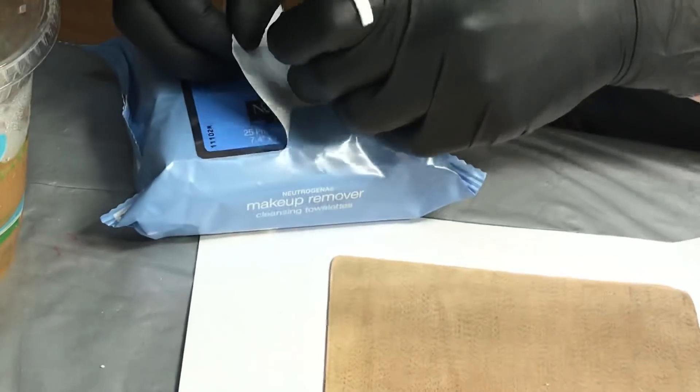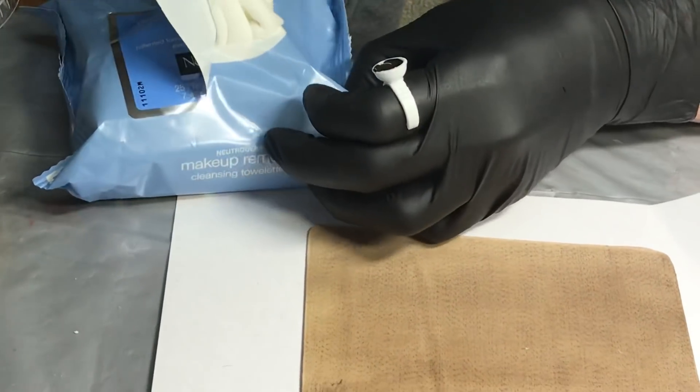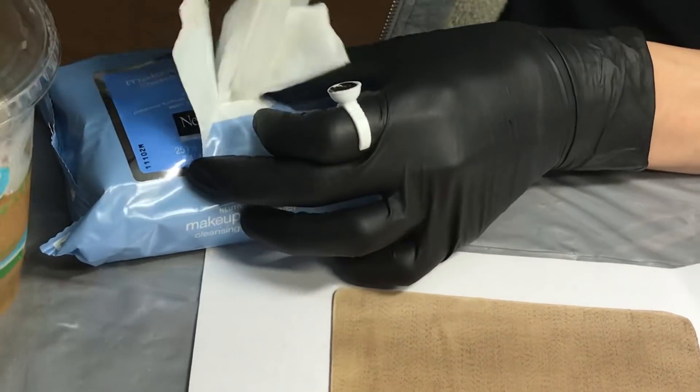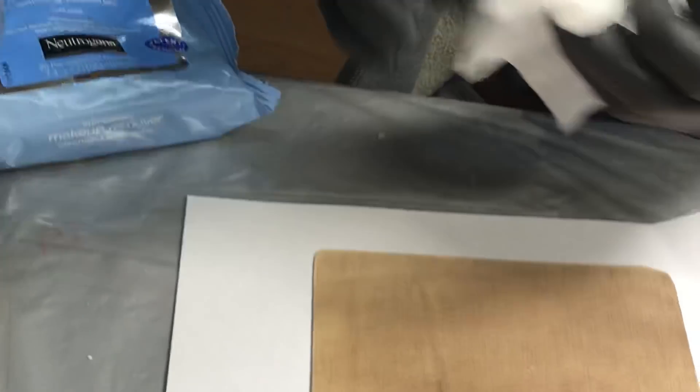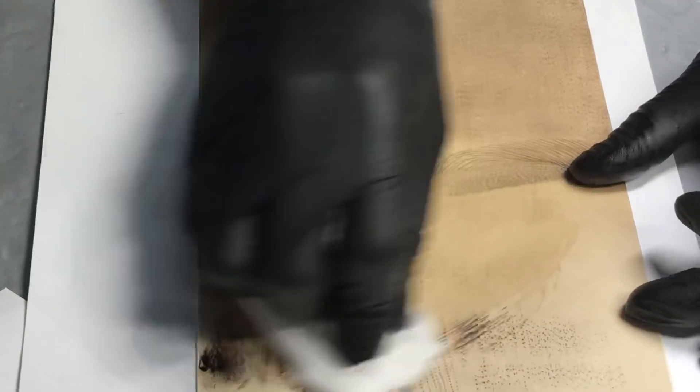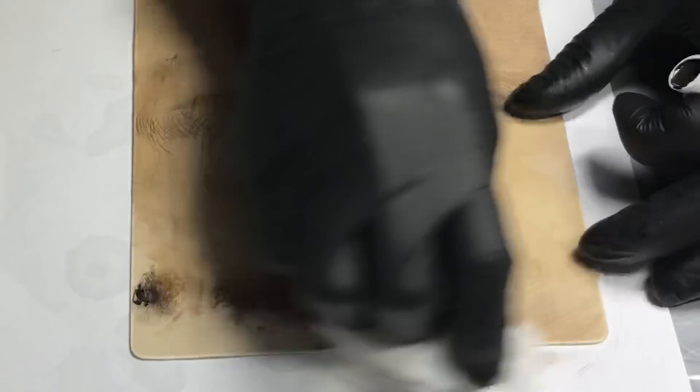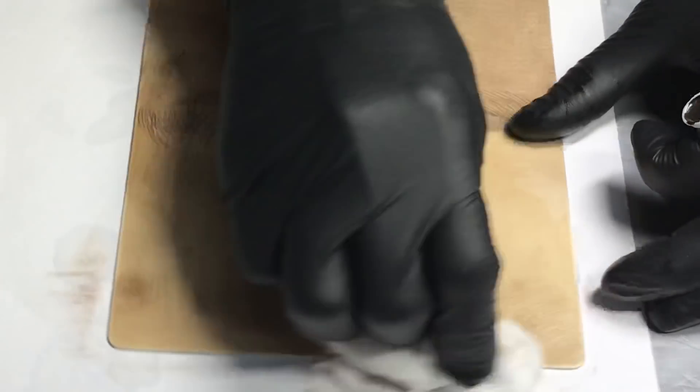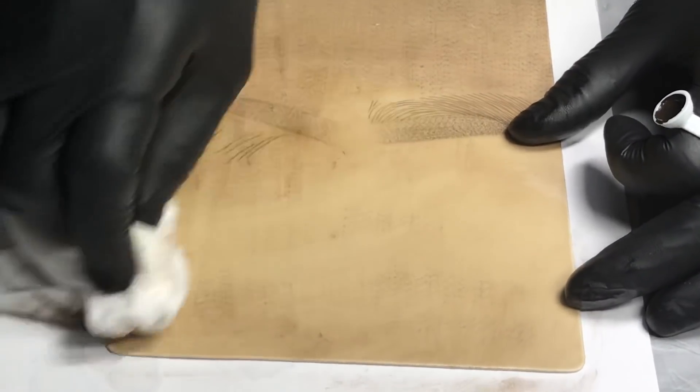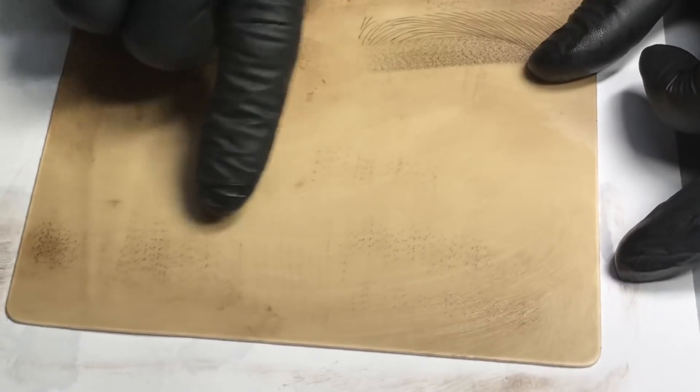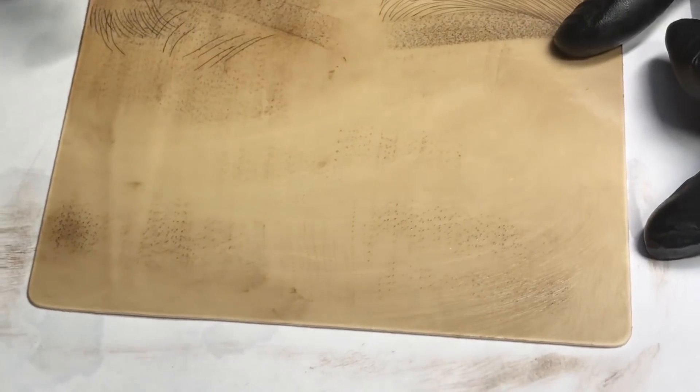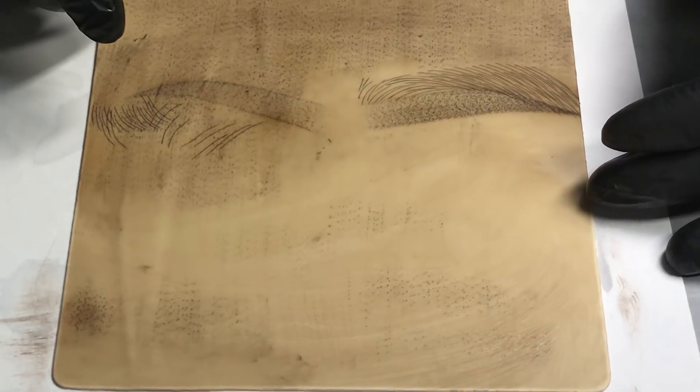So now what we do after this, we just get some makeup removal and then we wipe it off. Get the makeup removal real quick. And then wipe it off. So I'm going to wipe it off. You can see the difference. You can still see the powder, the dots. All right. That's it. Very quick lesson. Thank you for watching.